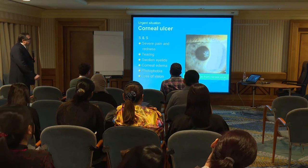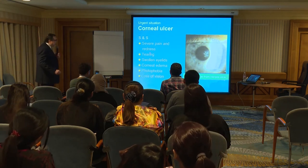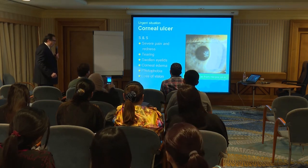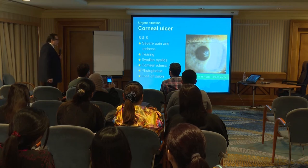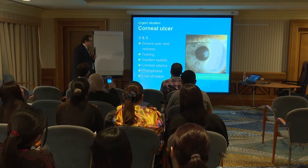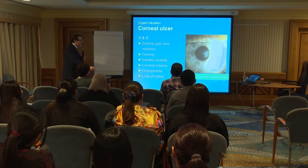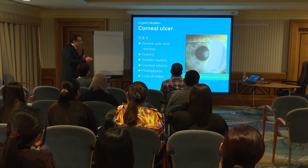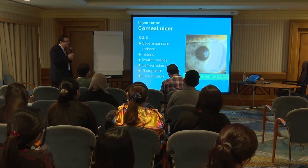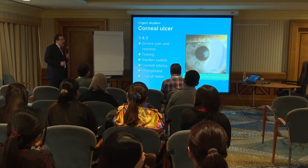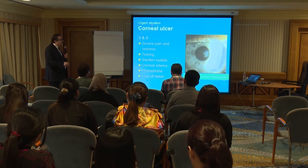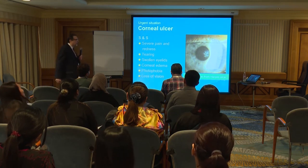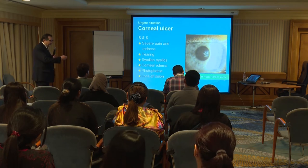Signs and symptoms of corneal ulcers include severe pain, redness, tearing, swollen eyelids, corneal edema, photophobia, and loss of vision. One disease that causes corneal ulcers is herpes simplex keratitis — a recurrent problem that can affect the cornea and cause corneal ulcer. We need to admit these patients and treat them during admission, which can take two weeks or more.